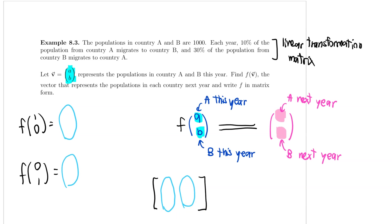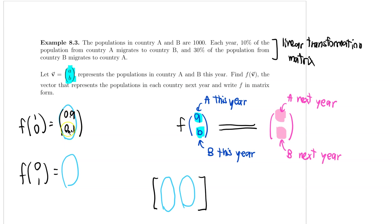What is F of (1, 0)? F of (1, 0) means if I have one person in country A and no one in country B this year, what is the population next year? Well, 10% of people from country A move to country B, so if I only have one person here, 0.1 people will move and remain in country B, whereas 0.9 people will be in country A. So the first column of my matrix is 0.9 and 0.1.